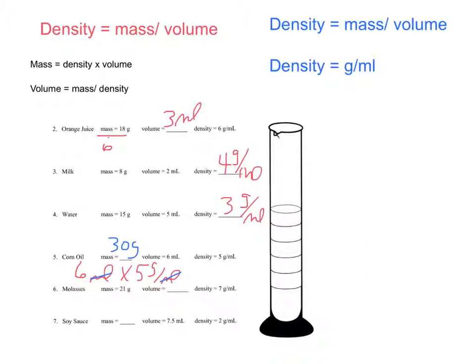Molasses, mass is 21 grams, volume is unknown. Density is 7 grams per milliliter. Again, 21 grams divided by 7 grams per milliliter. Our grams would cancel out. Let me try that again. That's 21 grams, so our grams cancels out, leaving milliliters, and we would have an answer of 3 milliliters.